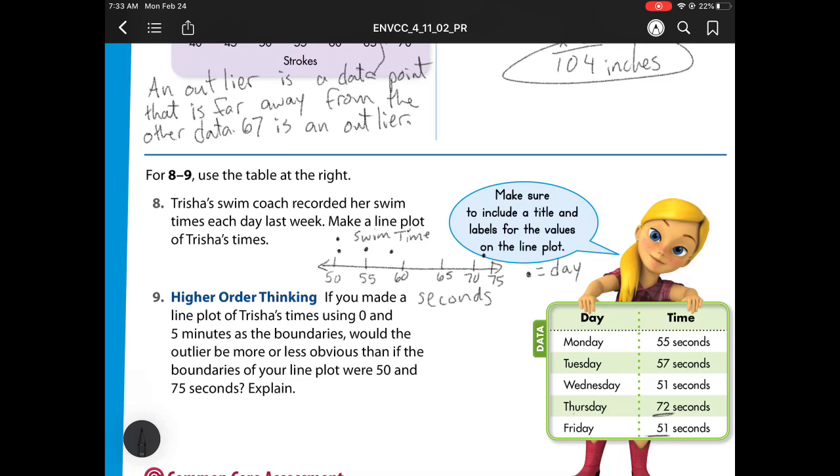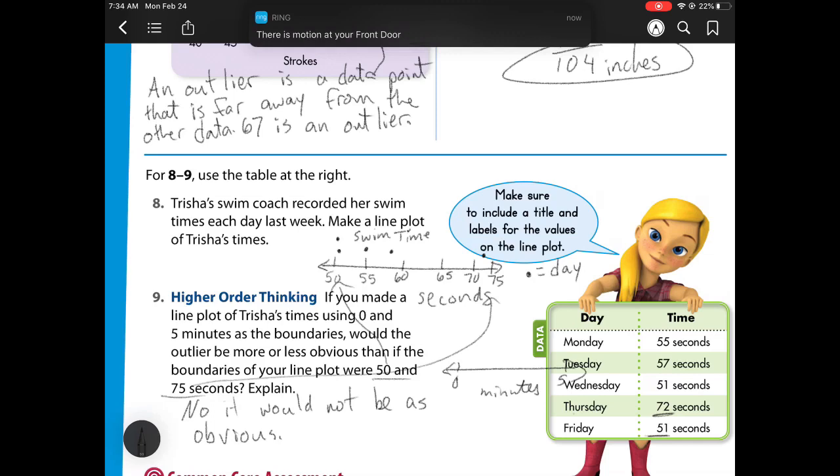If you made a line plot of Trisha's times using 0 and 5 minutes as the boundaries, would the outlier be more or less obvious than the boundaries of your line plots were 50 and 75? So we're asking, instead of using the numbers that we used right here, what if we went from 0 minutes to 5 minutes? Would it be as obvious? The answer is no. It would not be as obvious. And why is that? Well, the reason why is because my data was scattered in seconds. So my biggest range was 25.